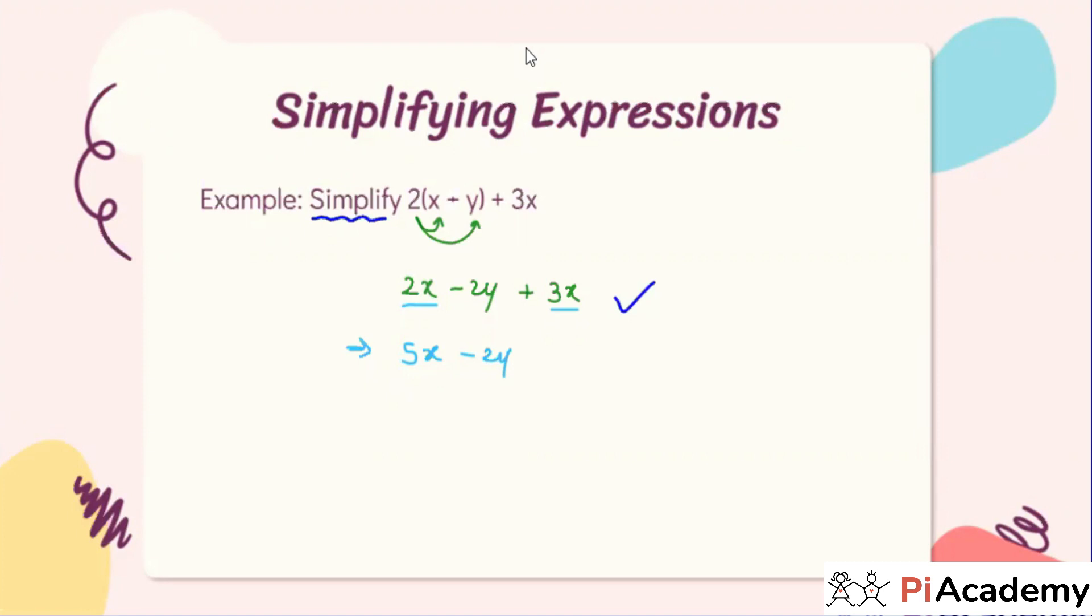I don't know how you got the answer. Okay, so steps are clear, right? Adam, it's not clear? Okay, nothing to worry. 2 times x, that is 2x. 2 times y, that is 2y, and the minus sign is between there. And the plus 3x as it is. Now 2x plus 3x, that is going to be what? 5x, right?